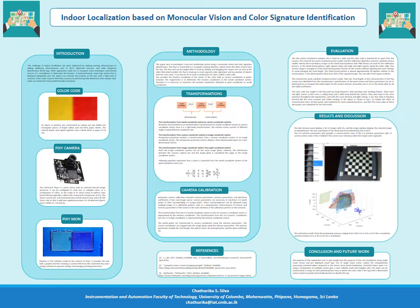The estimation results show positioning accuracy ranging from 0.067 cm to 3.15 cm for the y-coordinates, and 0.0133 cm to 1.45 cm for the x-coordinates. As a conclusion, the purpose of this experiment was to gain insight into low-cost localization using a single vision sensor and pre-deployed visual tags. The use of a single vision sensor reduces computational processing overhead when compared to stereo vision-based localization.